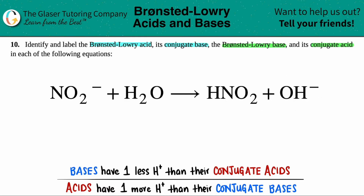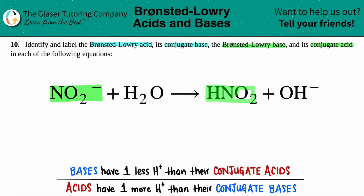The easiest way to go about this is to first pick out the pairs — pick out the components on both sides of the equation that look very similar. I like to work from left to right. So if I pick NO2 minus, I go to the product side and ask which one looks very similar — is it HNO2 or OH minus? They have to have the same elements. So nitrogen hooks up with nitrogen: NO2 minus goes with HNO2. Then H2O goes with OH minus.